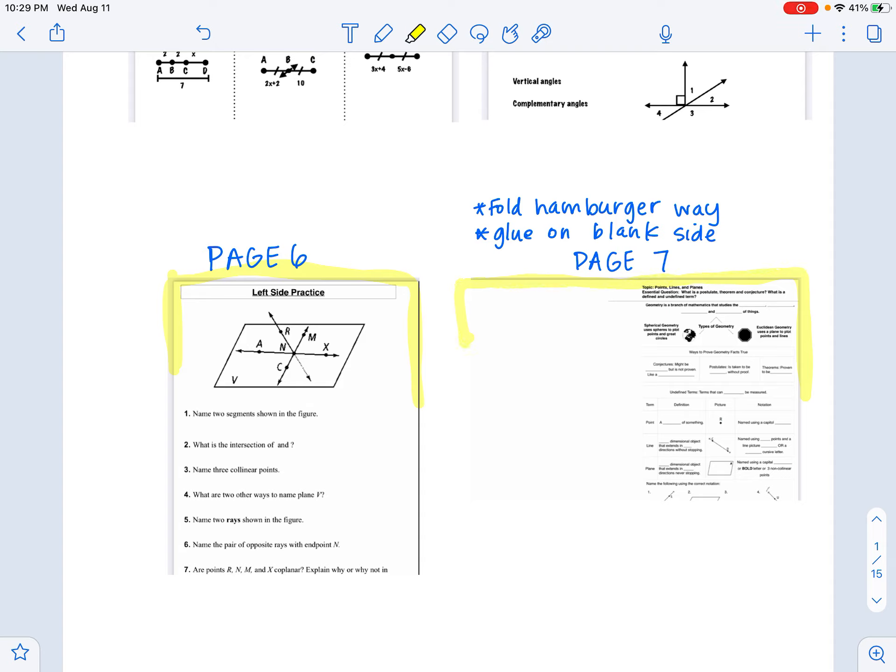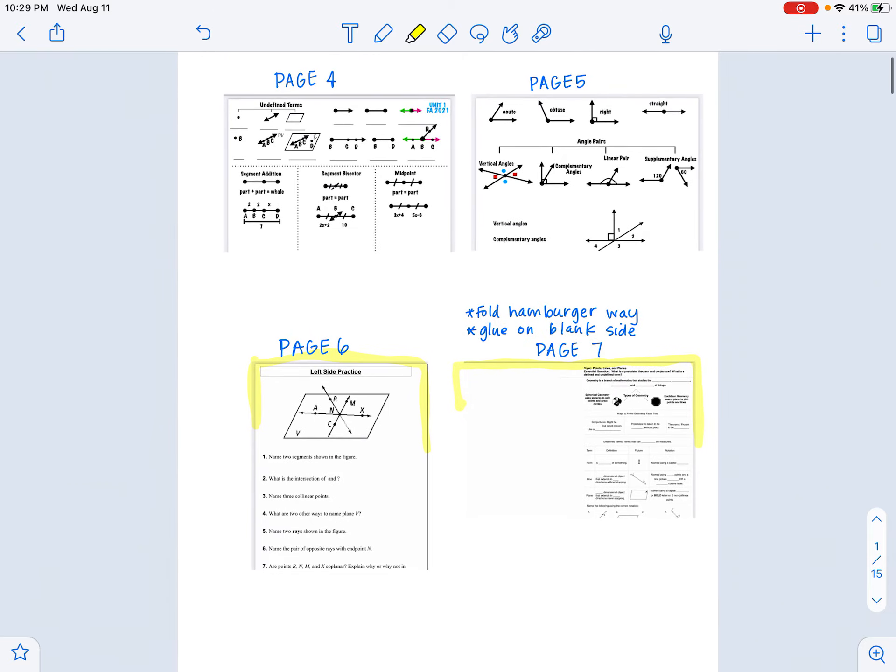And then lastly you're going to paste on page seven the notes for today and tomorrow. You're going to fold it hamburger way, so remember where that blank side can get glued down. Glue it down on the blank slide. You should have it to where it folds open and you can write on all three pages of those notes. If you want to go ahead and pause here, so you can complete that, and then you can go on with the video.